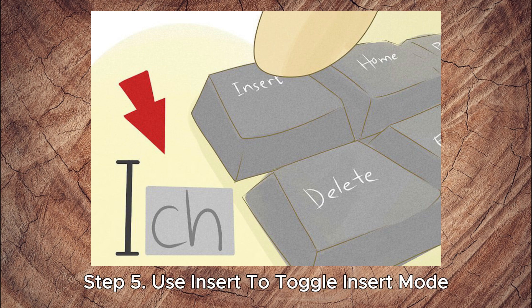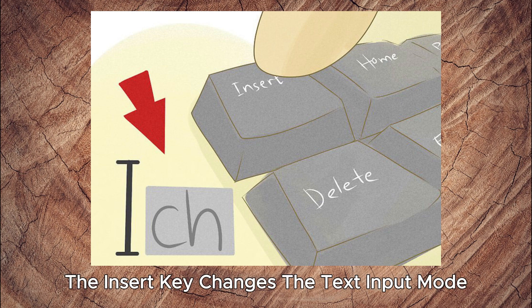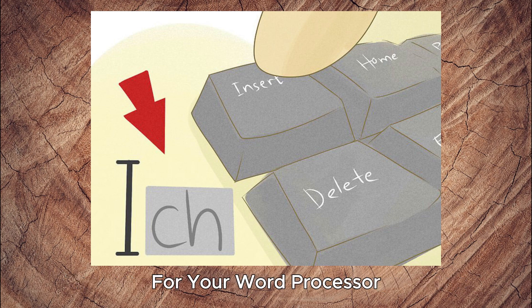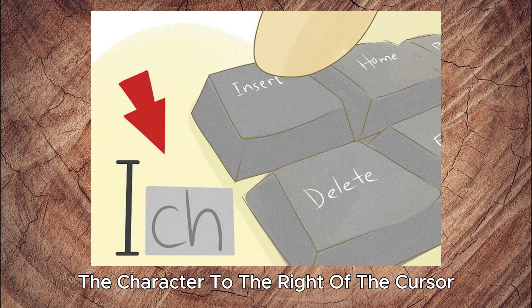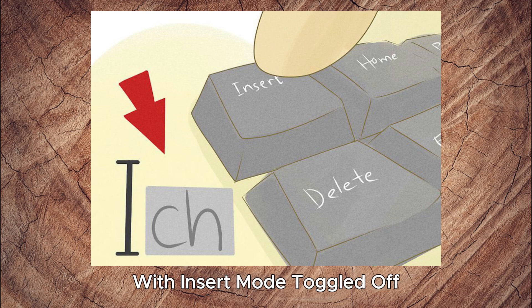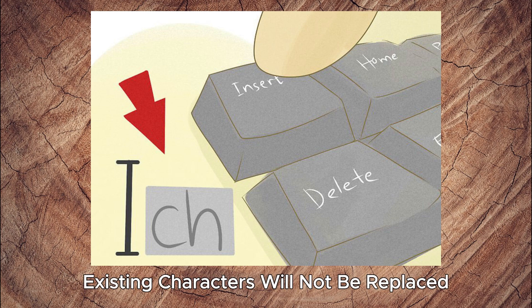Step 5: Use Insert to toggle insert mode. The Insert key changes the text input mode for your word processor. When insert mode is toggled on, any character you input will replace the character to the right of the cursor. With insert mode toggled off, existing characters will not be replaced.